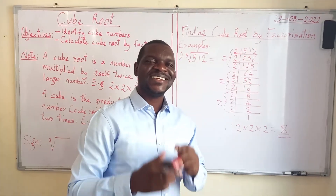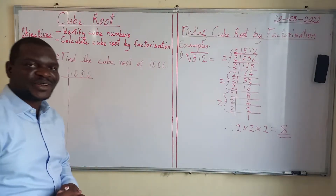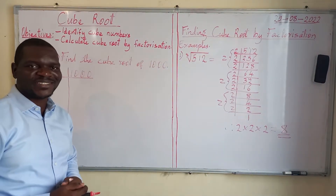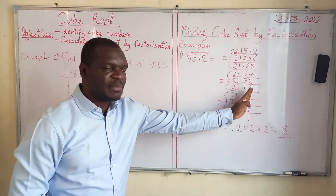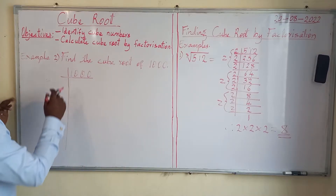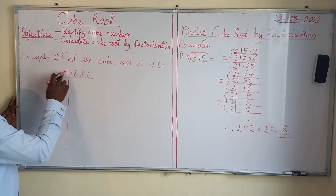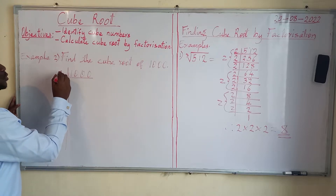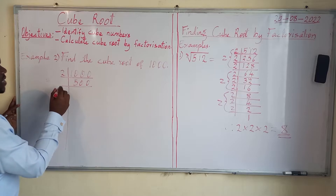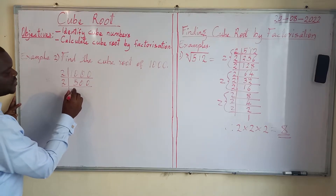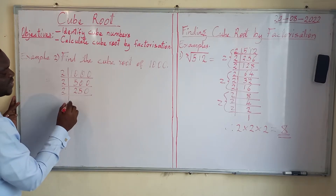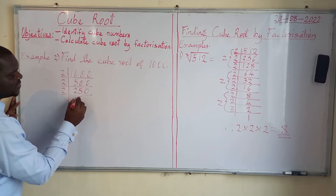Let's look at the second example: find the cube root of 1,000. We use the same method. 1,000 is an even number, so we start with the smallest prime number, 2. 2 divides 1,000 to give 500. 2 divides 500 to give 250. 2 divides 250 to give 125.